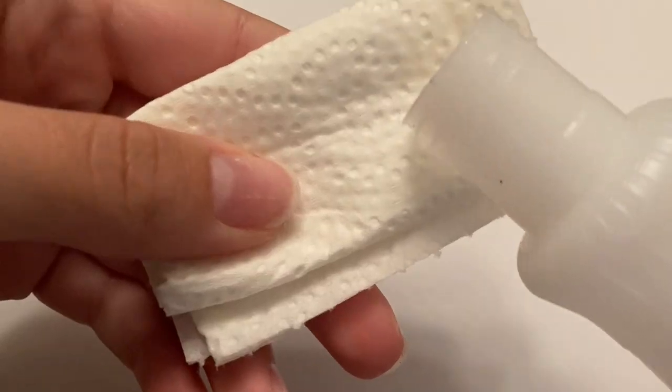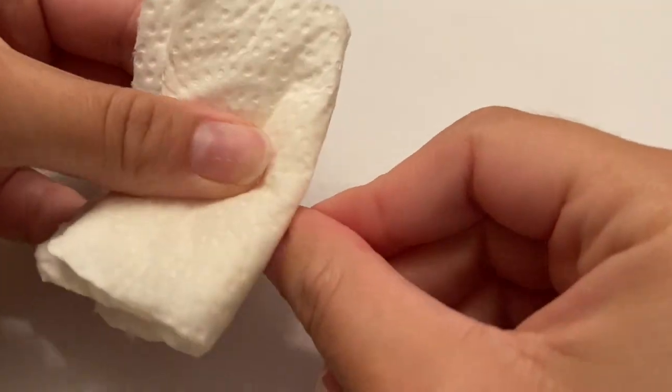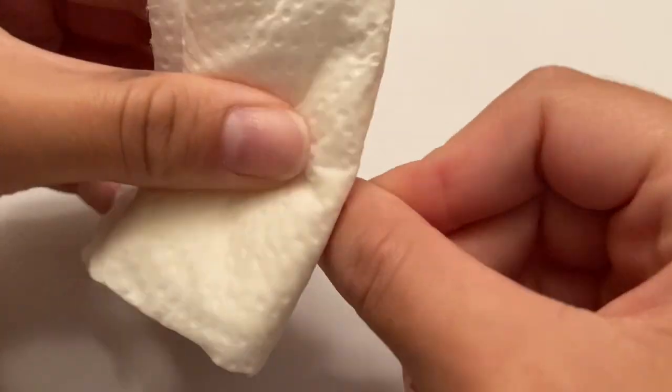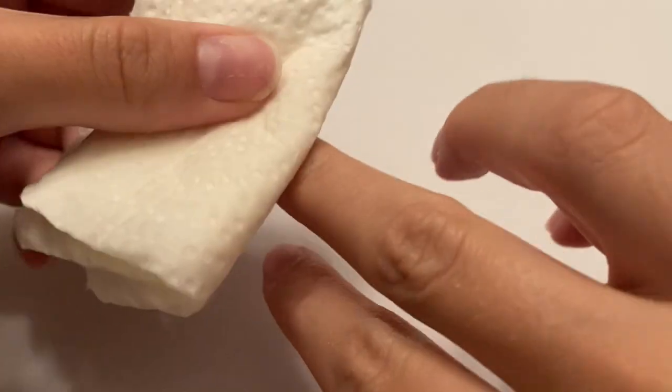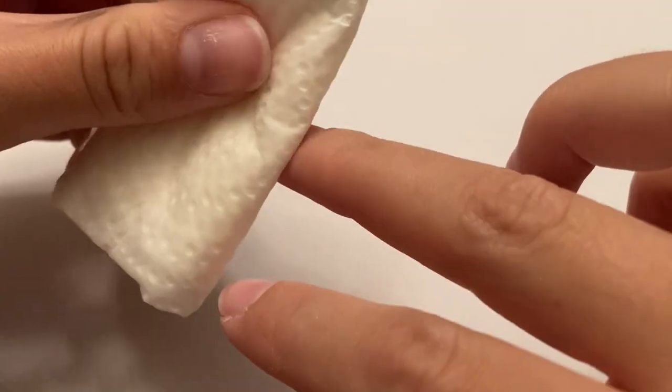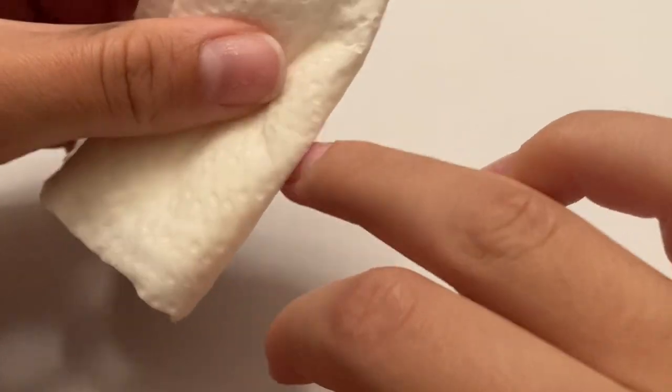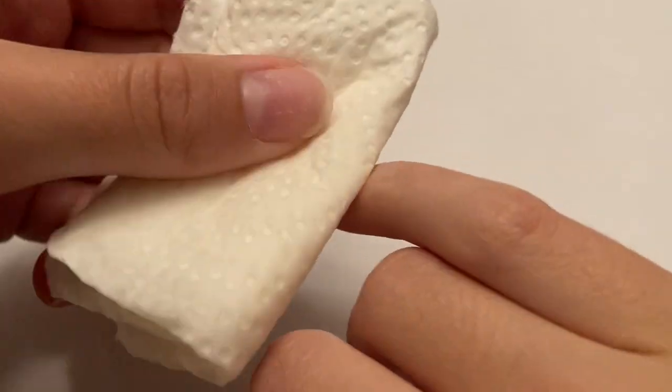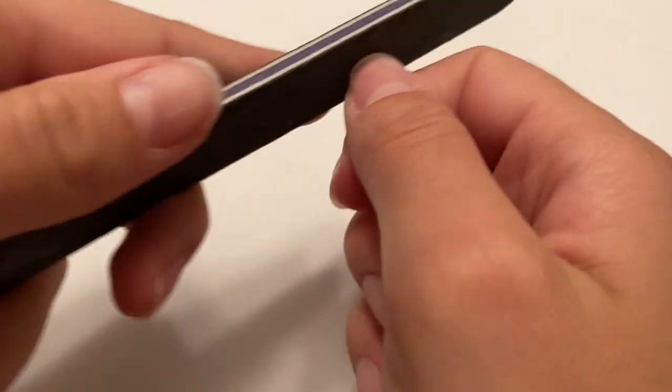Another thing that will help your gel polish stay on with your peel off base coat is applying either acetone, dehydrator, or rubbing alcohol to your natural nails right before applying the first coat of the peel off base coat. Any of these will help dehydrate your nails and just remove those natural oils so the gel polish stays on longer.